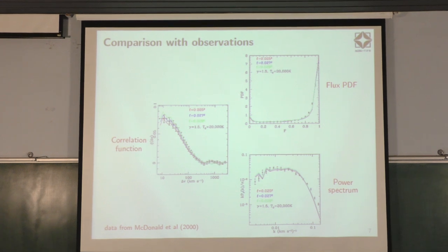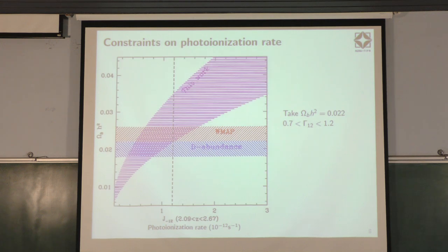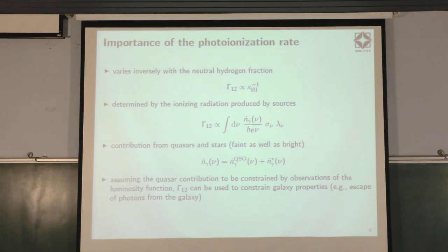We could actually just go ahead and started putting constraints on various parameters. One parameter which you can put constraint on is a combination of the baryonic density and the photo ionization rate in some units. This is the kind of constraint you will get from the work which we have done, this magenta region. Now if you would know the value of omega b h squared from some other experiments, you can put a constraint on the photo ionization rate. For example, if you take omega b h squared to be this value, you will get a constraint on photo ionization rate of this.